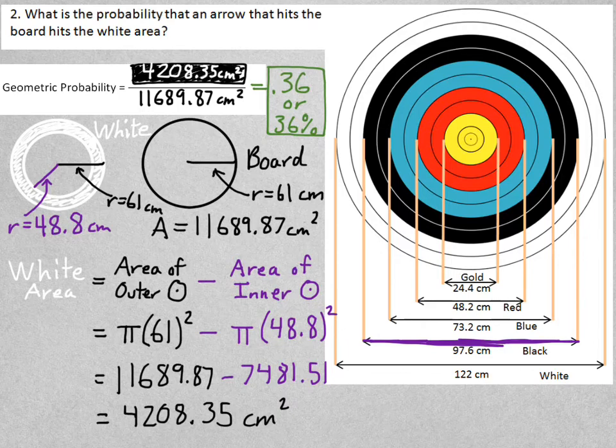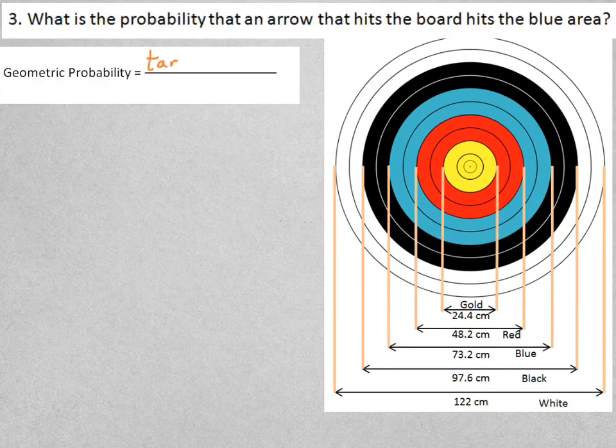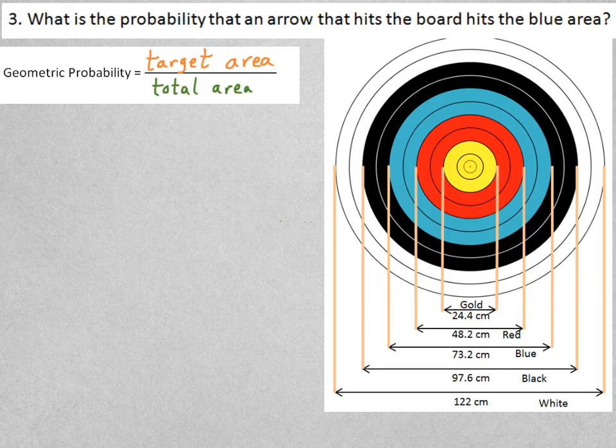Now that we've done two examples, do you think you could do one on your own? You try to find the probability that an arrow hits the blue area. Pause the video, try to do it on your own, and then you can check with what I get.